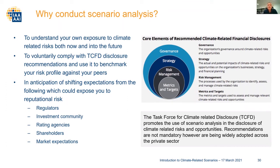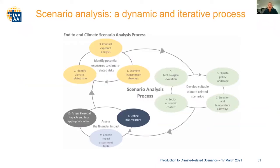This graphic provides a schematic view of what scenario analysis does. The first element, in the orange ovals, involves identifying potential exposures to climate-related risks through transmission channels. We start with some scenarios looking at the various climate pathways — Philip talked about the various RCP scenarios — and then understand how assets or firms or other financial things are exposed to those climate risks. We then consider the socioeconomic context of the country or local region.